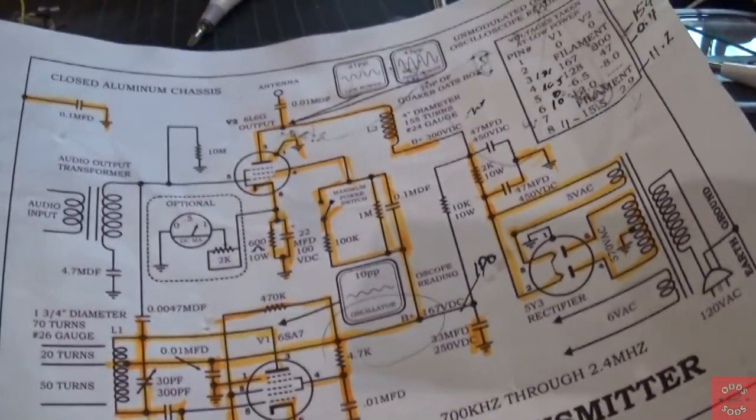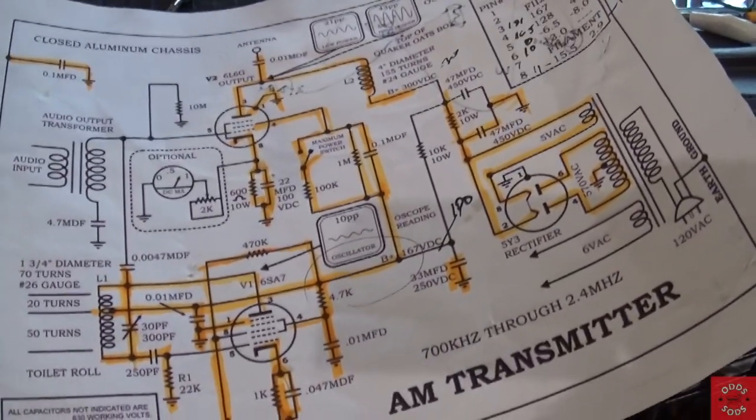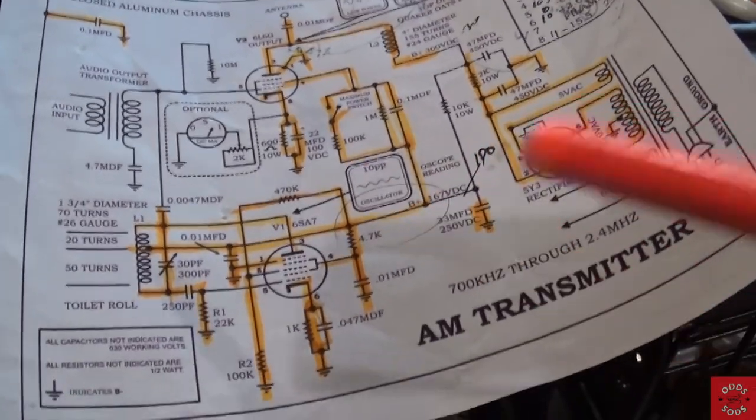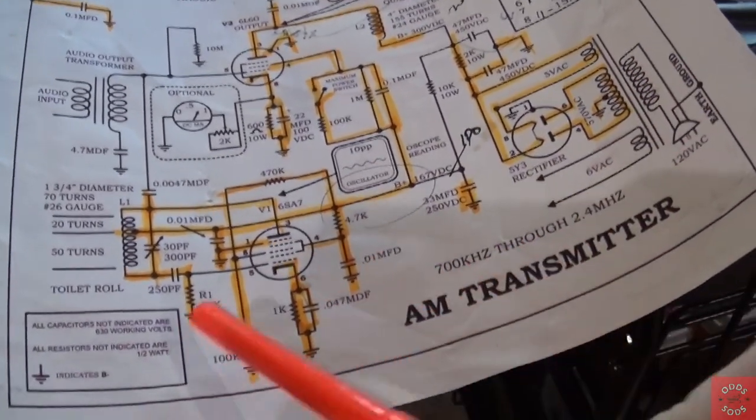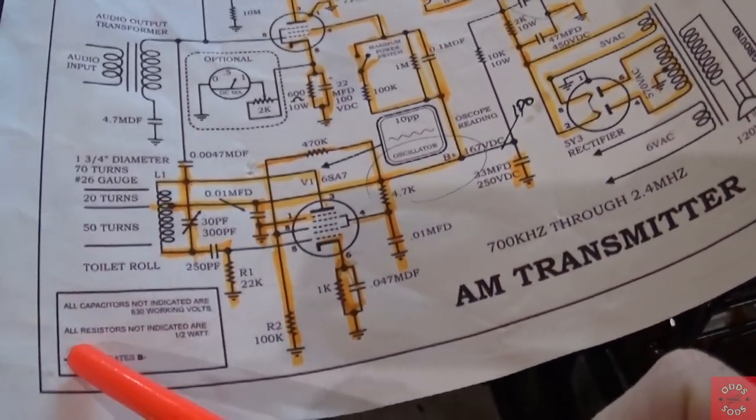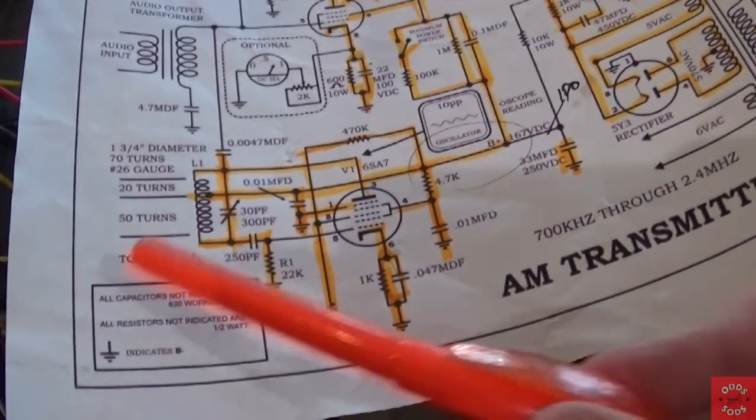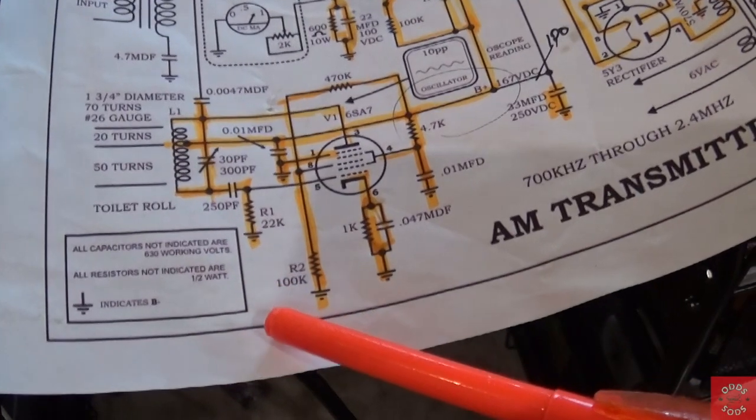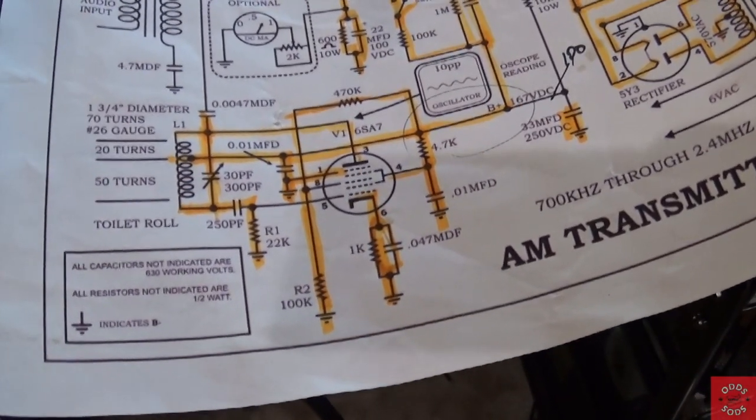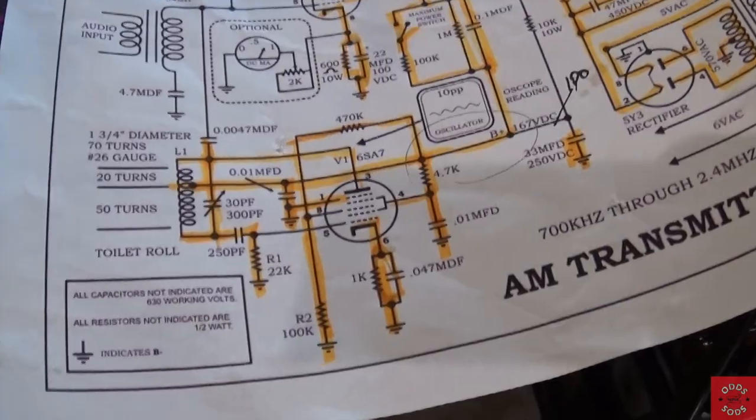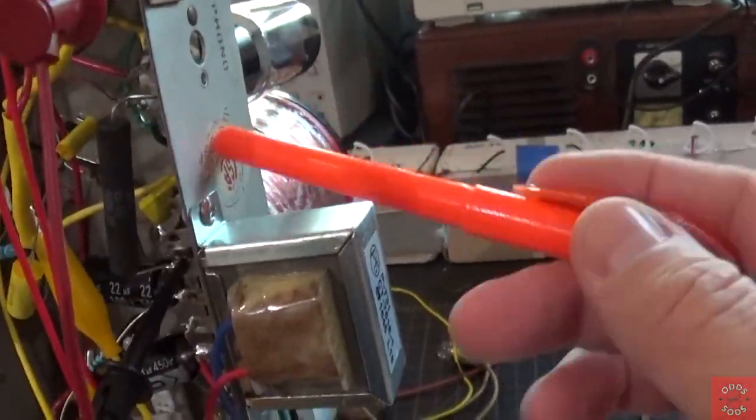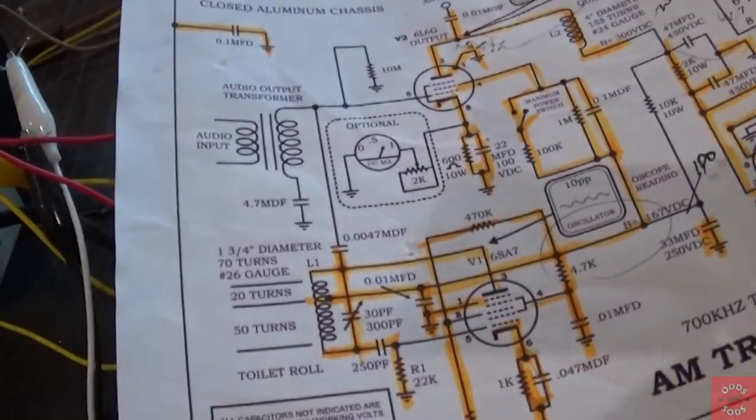But I have another problem here, which I have to solve. And that is, if I connect my meter to this B minus rail, which is indicated by this ground symbol, if I connect one side there and one side to the chassis, I'm getting about 200 and something volts DC on the chassis itself, right here. That's not good. That's dangerous.